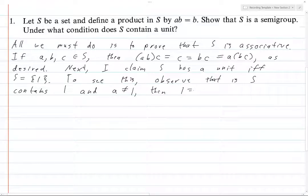One is, well by definition of the unit, equal to one times a, which is equal to a. But a is not equal to one, surprise, and this is a contradiction.